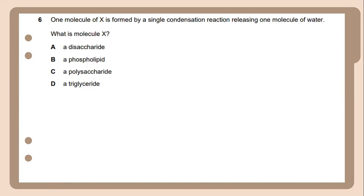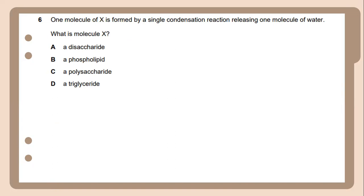Number 6. One molecule of X is formed by a single condensation reaction releasing one molecule of water. What is molecule X? A single condensation reaction releasing one molecule of water typically indicates the formation of a disaccharide. It involves joining two monosaccharides together with the loss of one water molecule. Therefore, the correct answer and the molecule X is a disaccharide.